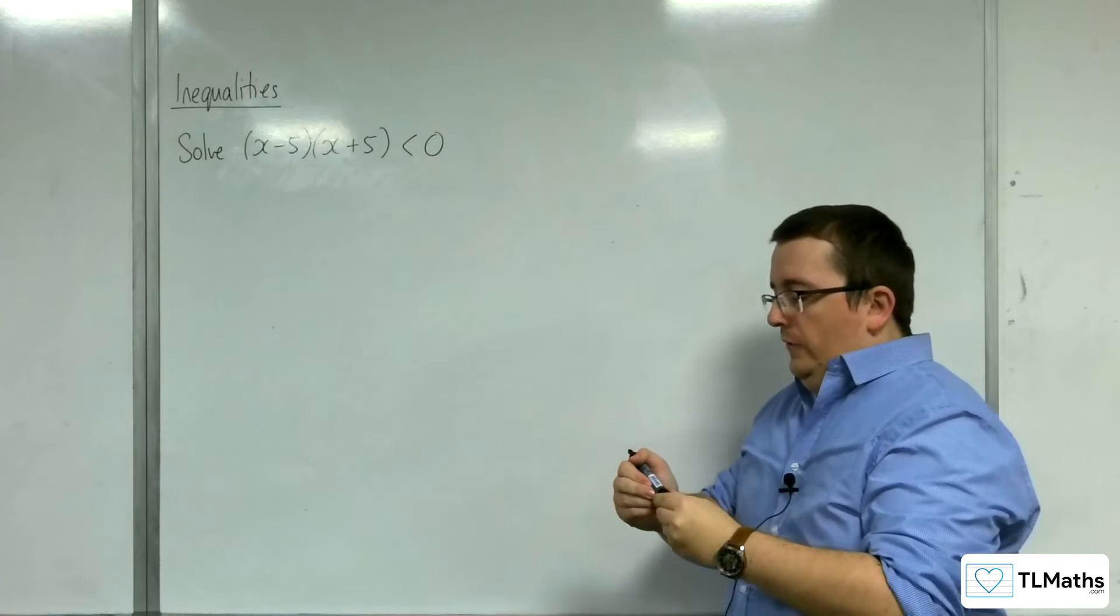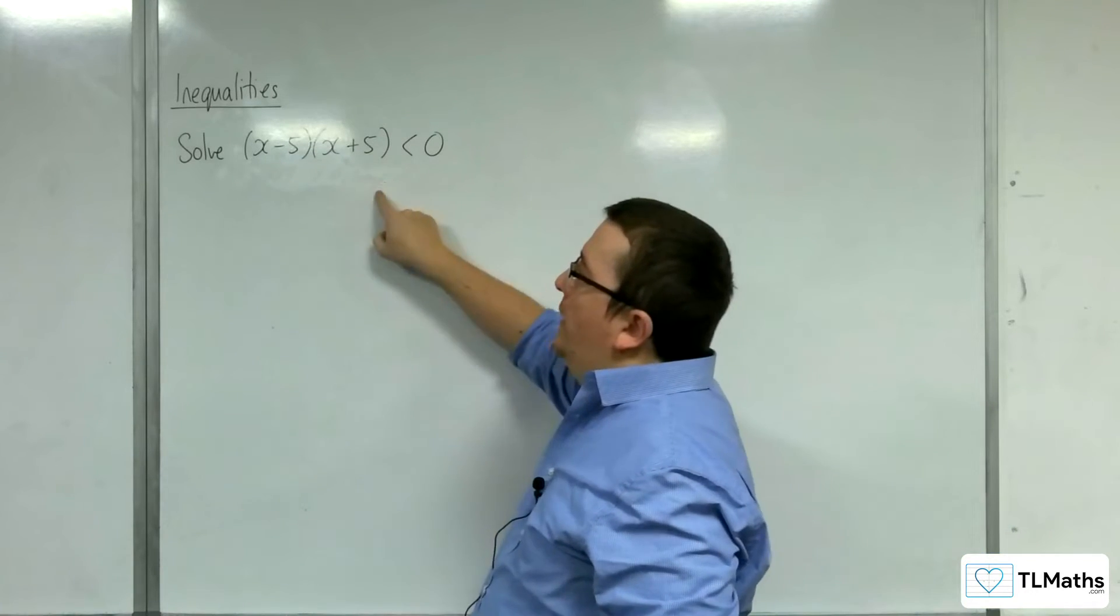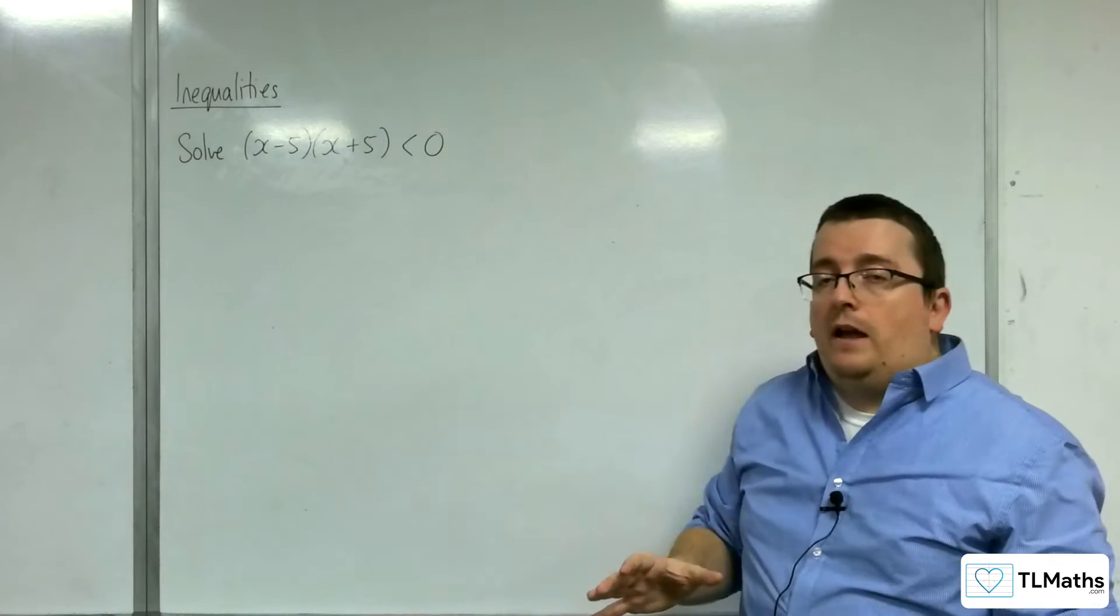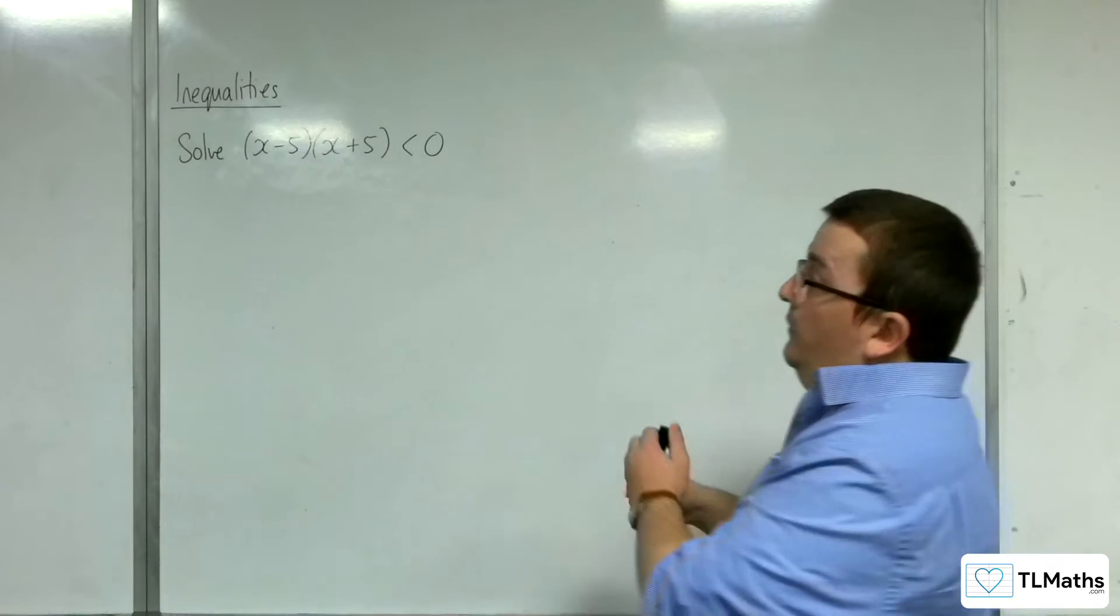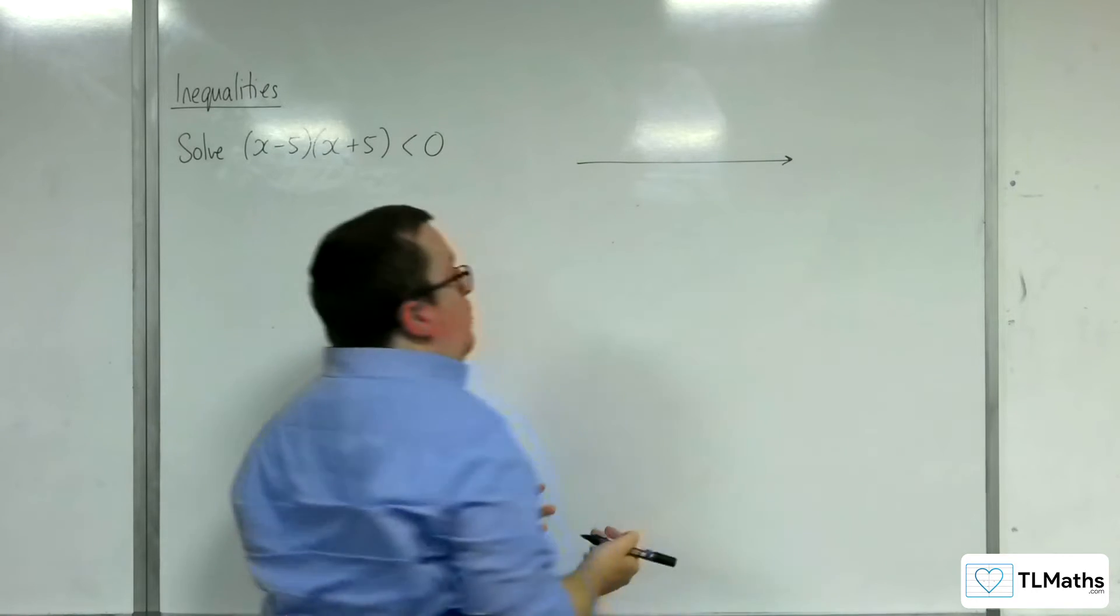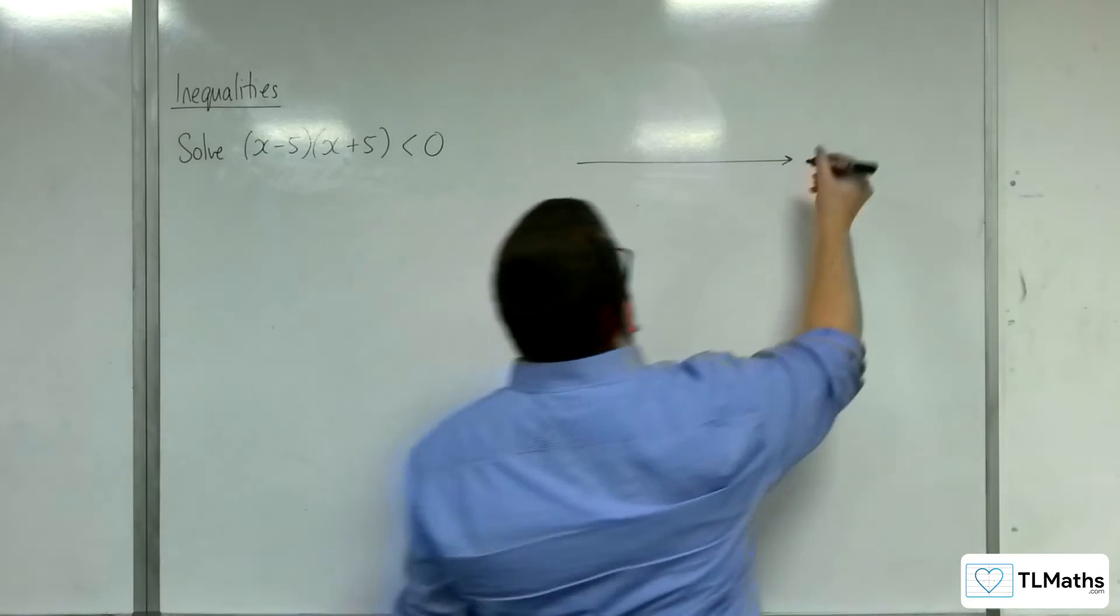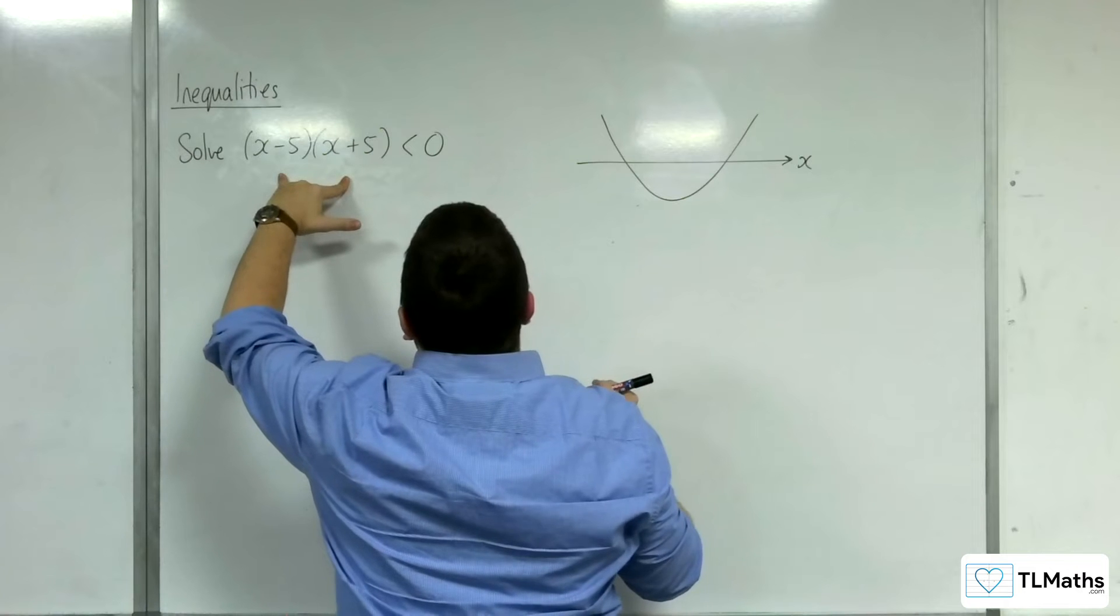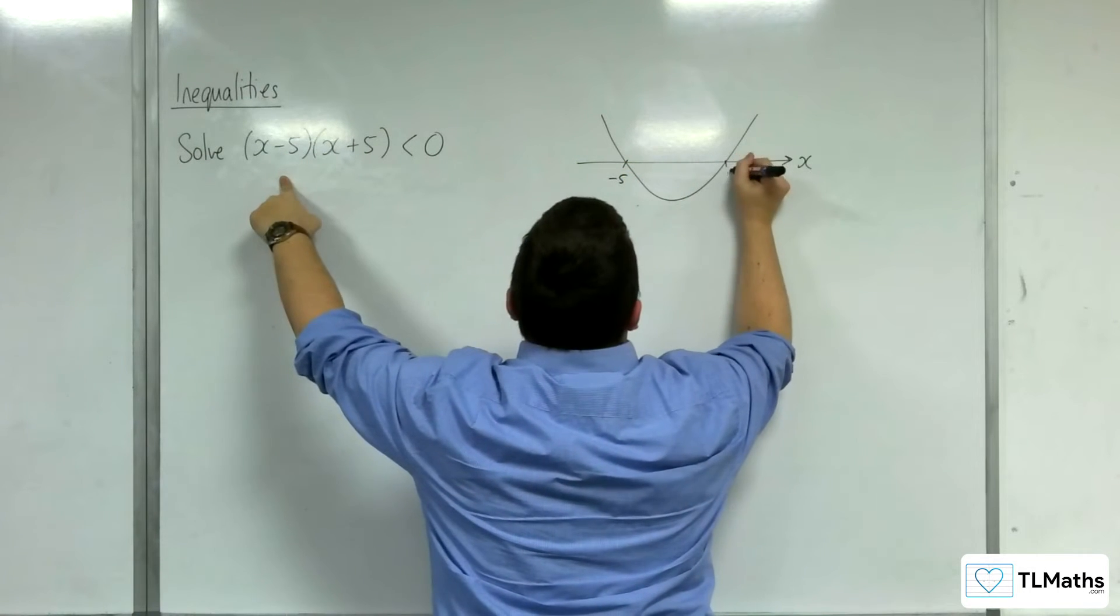What I'd want to do at this stage is to sketch the graph of y equals (x minus 5)(x plus 5). Now, the sketch that I make only has to be basic at this stage for a parabola. All I'm going to do is I'm not even going to bother drawing on a y-axis. I'm just going to go straight to an x-axis. And this is a parabola that would cross the x-axis twice, once at minus 5, and once at positive 5.